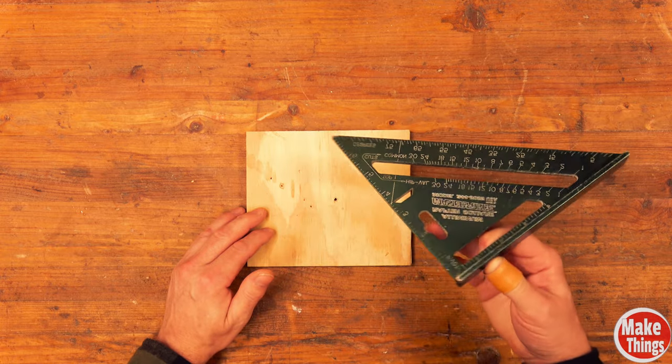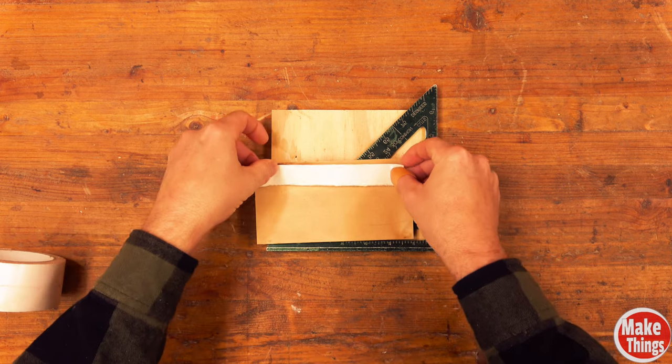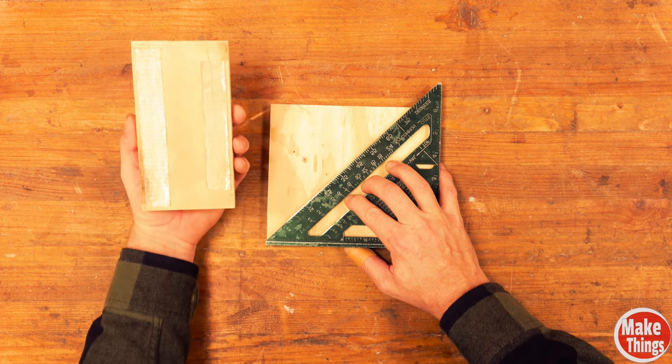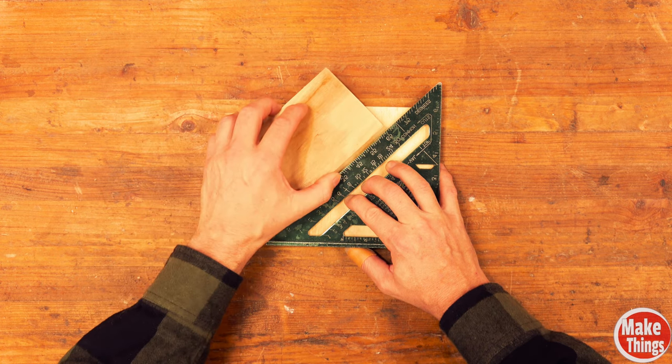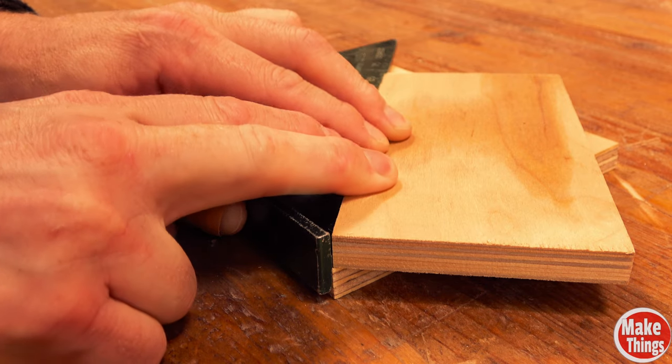The first thing we're going to do is take our carpenter square and put it on our scrap piece of plywood. We'll take our rectangle and add a little bit of carpet tape on the back side of it. Then we'll take that small rectangle piece and put it right on the edge so the points line up at the bottom.